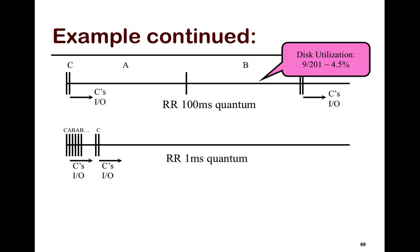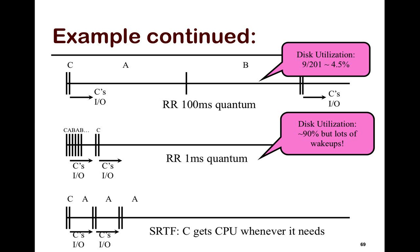And if you use a much smaller time quantum, then you have disk utilization improved significantly, but then you have lots of wake-ups, and obviously, the scheduling cost is going to be very high.